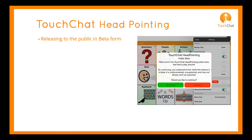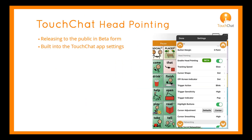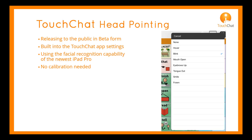We have released head pointing in beta form, built into the TouchChat app settings. It uses the facial recognition capabilities of the newest iPad Pro to track your head and face movement. At this time, options include a hover, eye blink, mouth open, eyebrows up, tongue out, smile, and a frown. No calibration is needed; however, you can re-center the cursor if necessary.